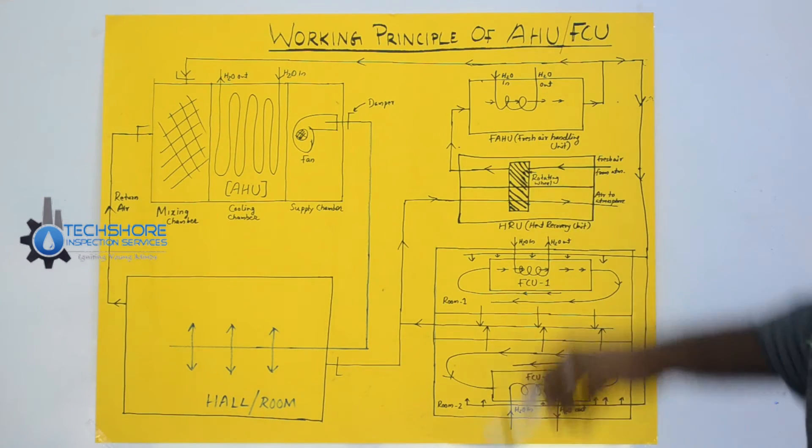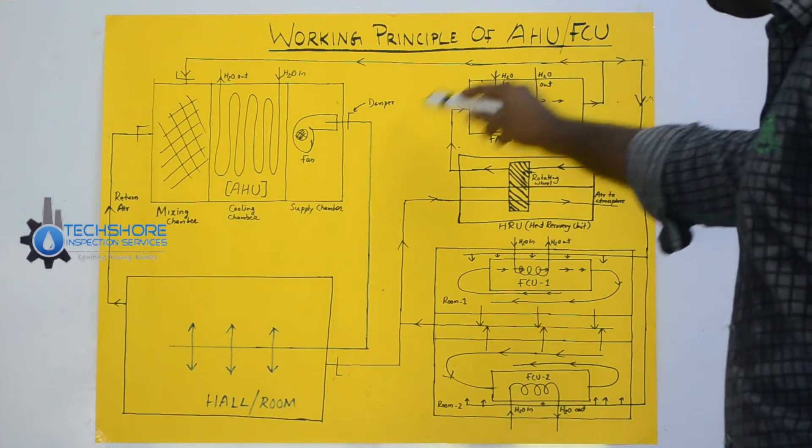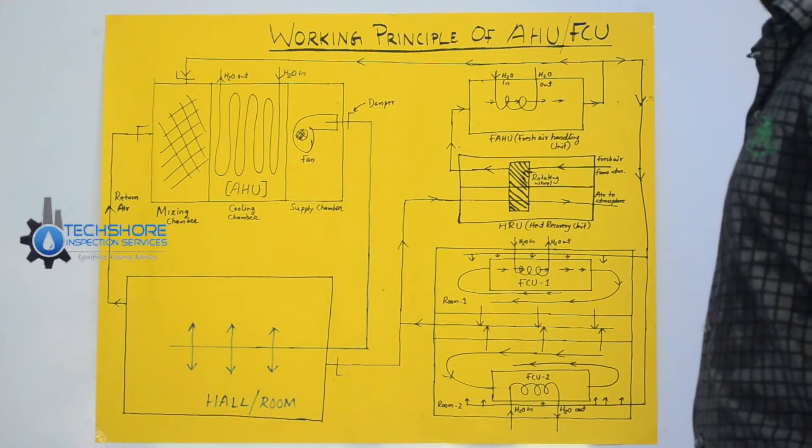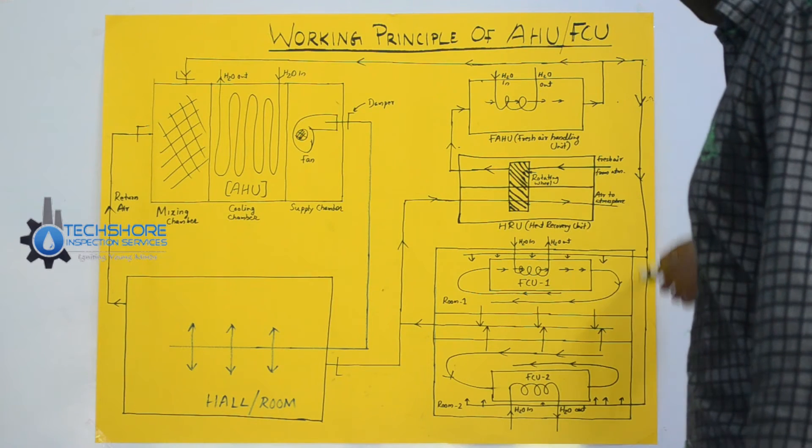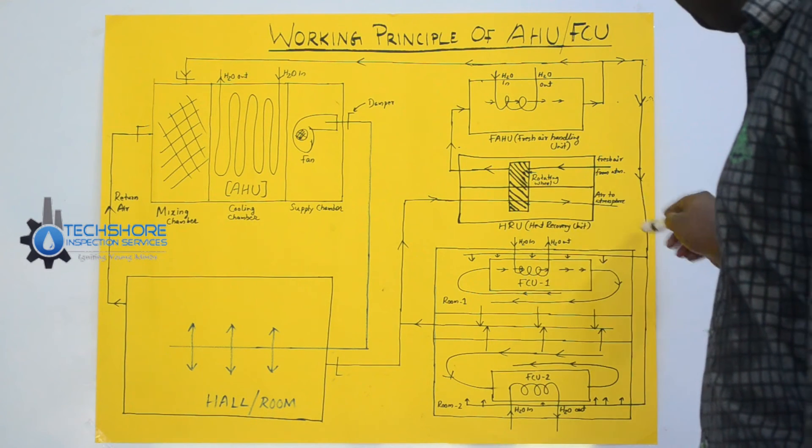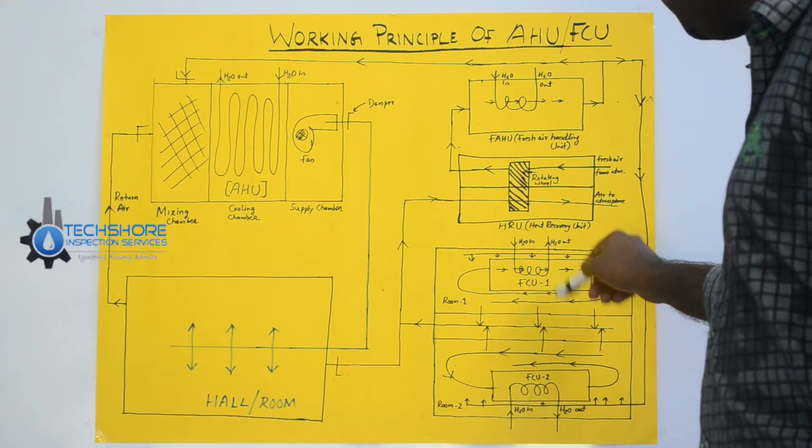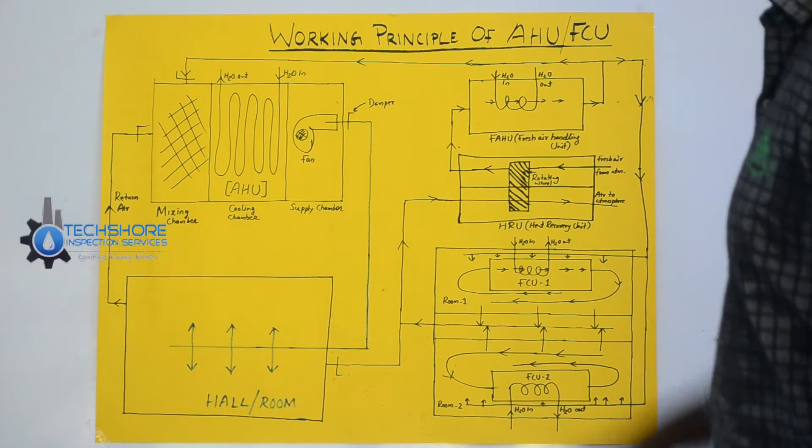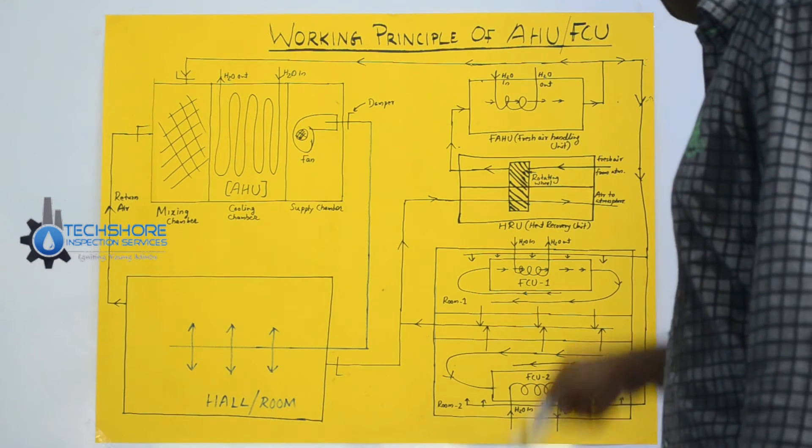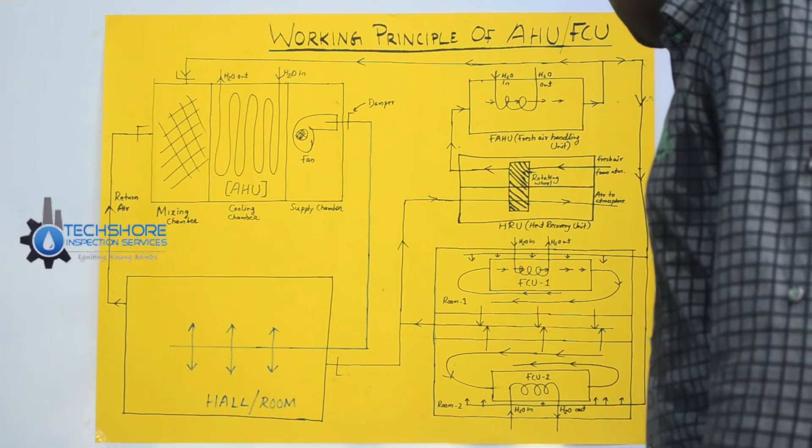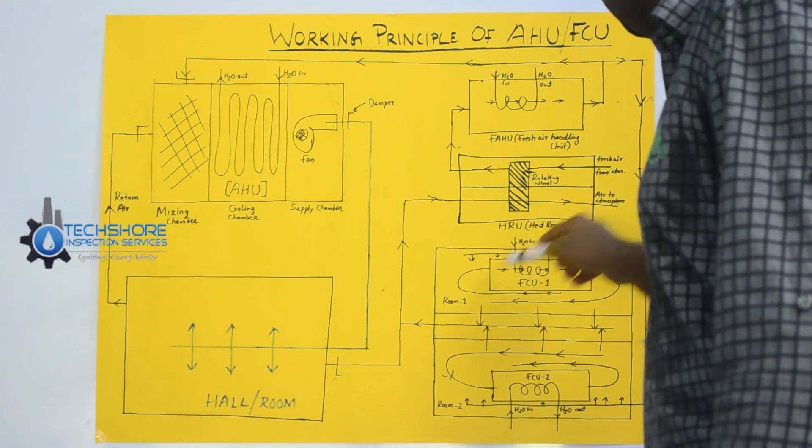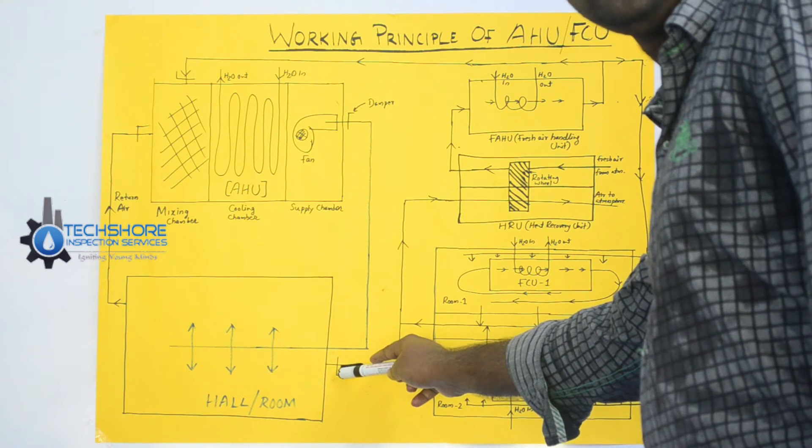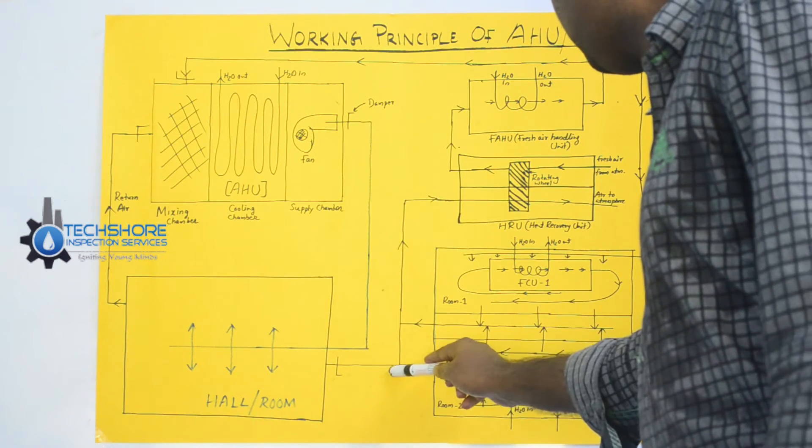We can see that if it is doing like this, it is taking the atmospheric air. Then what will happen, the room already has some air and this atmospheric air also it is taking. So there is a chance to increase the pressure of the air in the room. To avoid this, this setup is showing that the atmospheric air also, we can see there is a damper is provided there. This damper is controlling the air. If excess air is there,